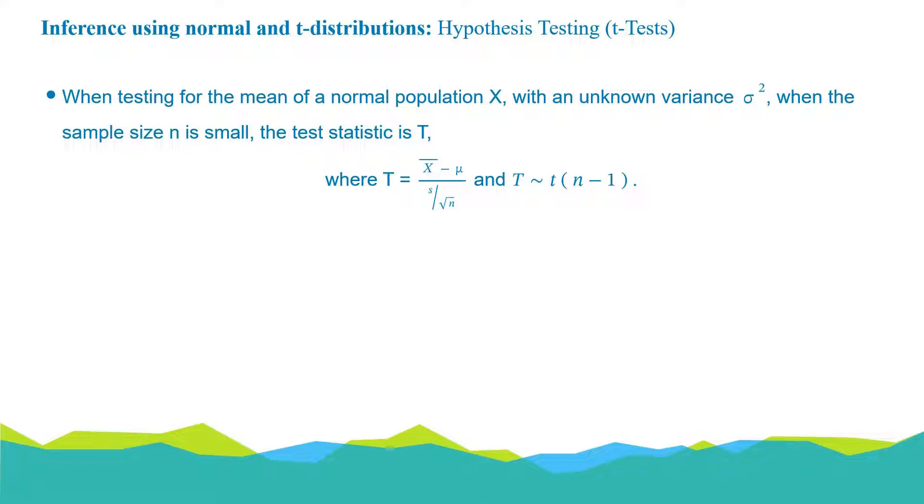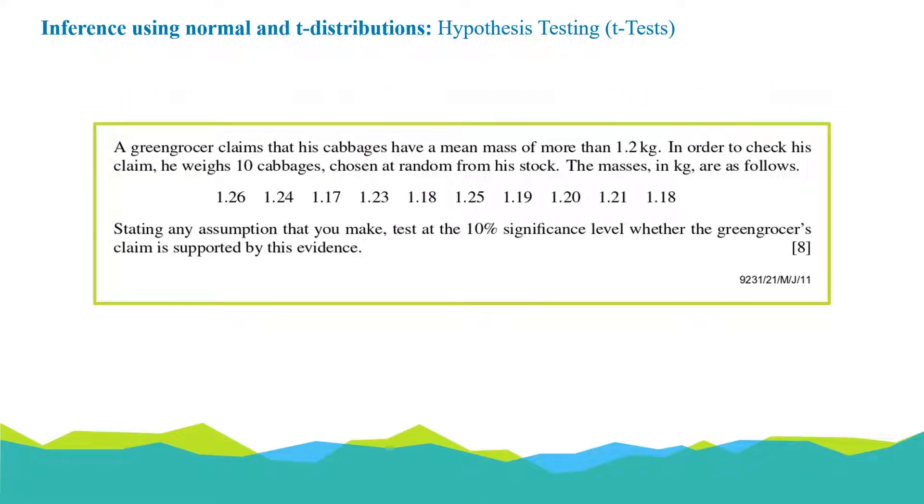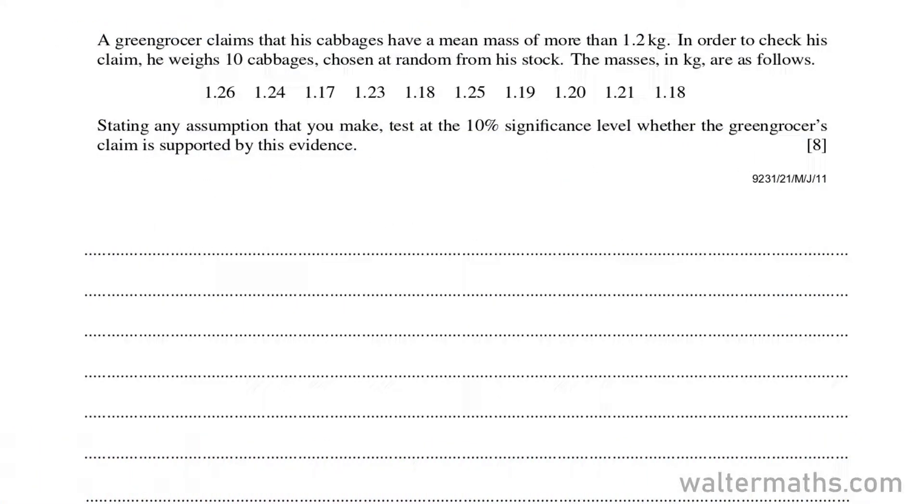Let's see how we can apply this in answering a question. A greengrocer claims that his cabbages have a mean mass of more than 1.2 kilograms. In order to check his claim, he weighs 10 cabbages chosen at random from his stock. The masses in kilograms are as follows. Stating any assumptions that you make, test at the 10% significance level whether the greengrocer's claim is supported by his evidence. Let's carry out the test.